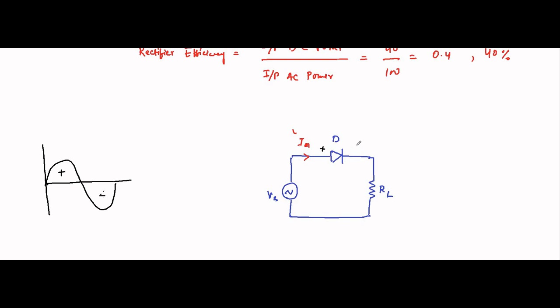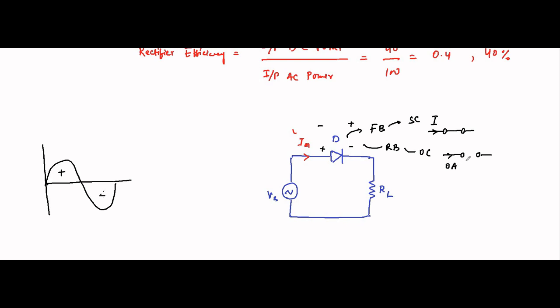During the positive half cycle, the diode is forward biased and behaves as a short circuit, and as a result current flows. During the negative half cycle, the diode behaves as reverse biased — an open circuit — and as a result no current flows.